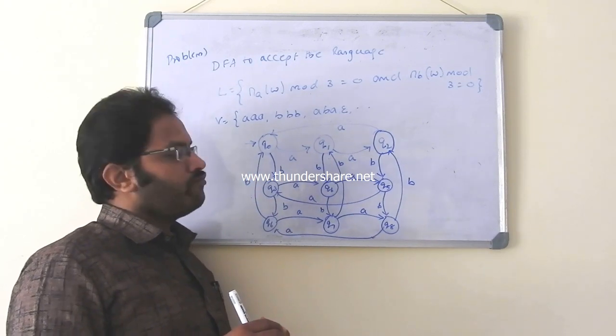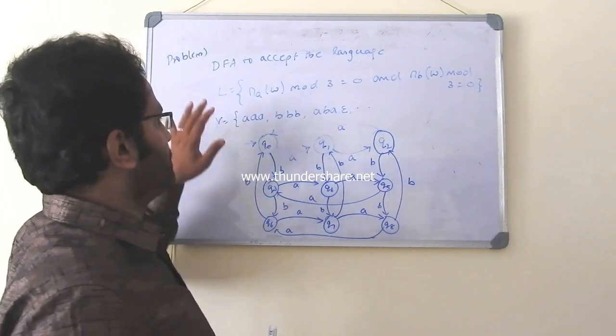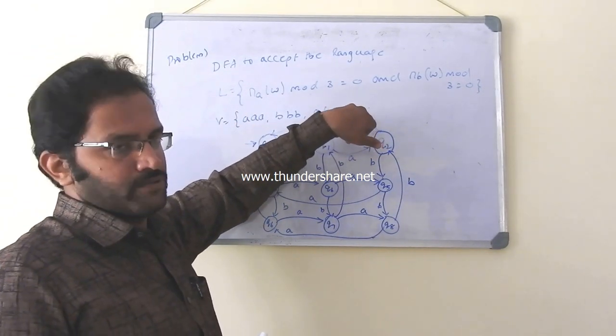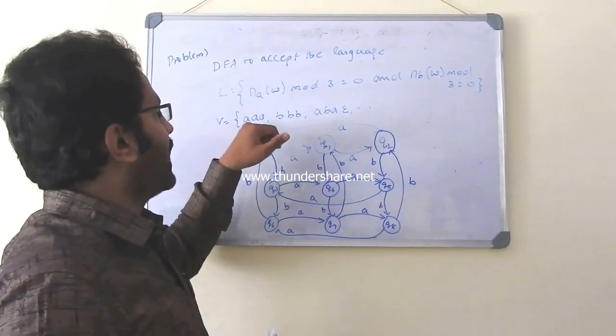After doing all these things, you should fix upon the final state. How do I fix that? Again, very simple. Check out the minimum string. Minimum string is epsilon. And some people have a confusion whether I can consider epsilon or not.